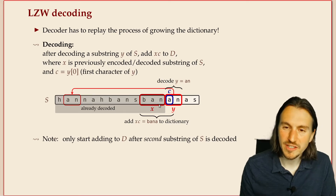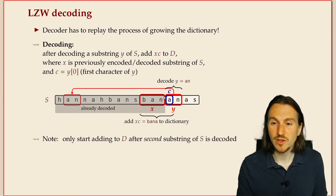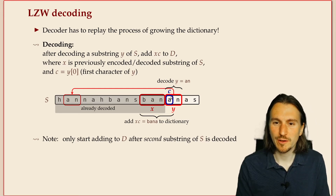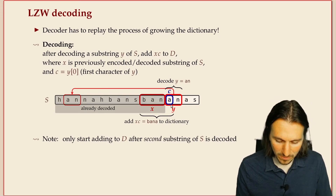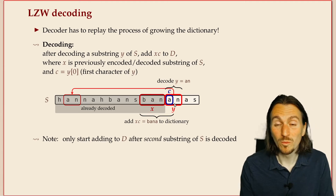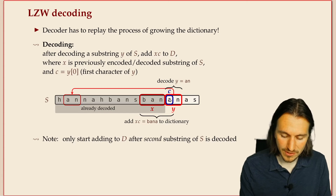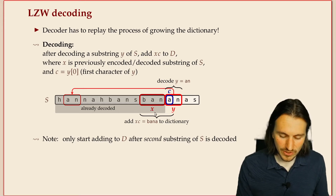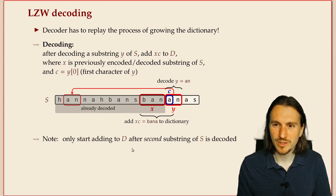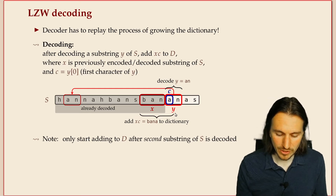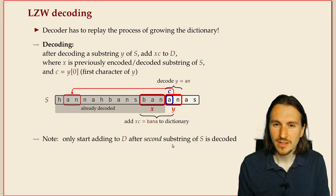For decoding: if we just decoded x, say 'ban', we know that in the encoding step when 'ban' was encoded, 'ban' plus the next character was added to the dictionary. We have to do this now too. But we need the next character from the next phrase, so we decode one more phrase and take its first character — that's what the 'xc' used to be. In a sense, we're lagging one step behind, always dealing with two phrases at once.